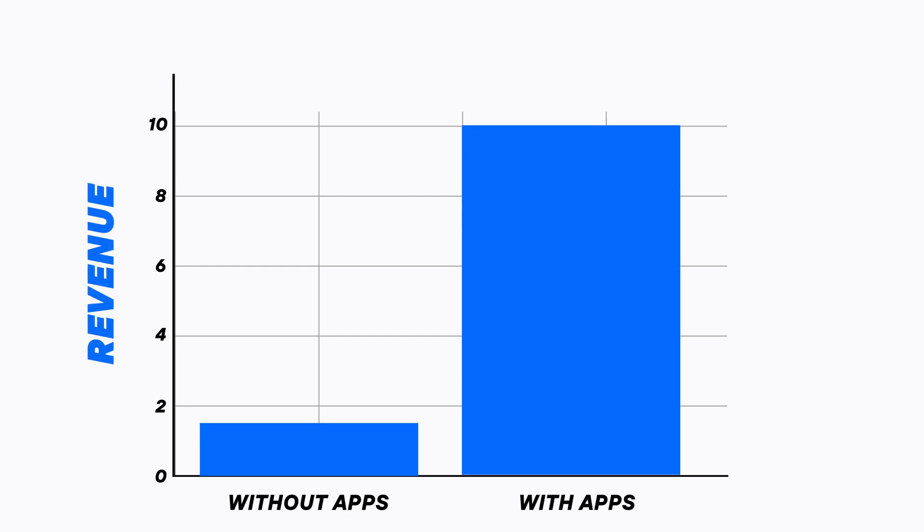Next, let's talk about apps. On both Mighty Networks and Uscreen, you can get your own branded apps for the Apple App Store and Google Play Store. This is a great feature for your audience to stay connected with you on the go, and we've found from our own data that memberships with apps have generated 10 times more revenue than memberships without them. Both platforms handle the development, submission, and management of the apps for you.